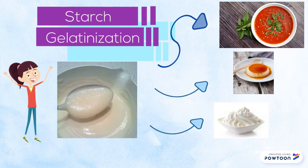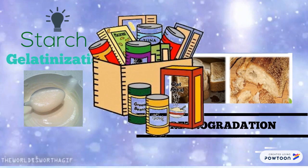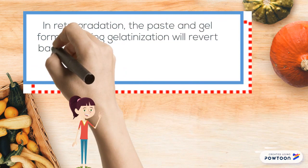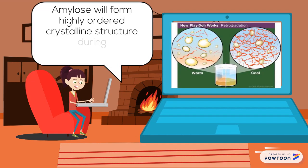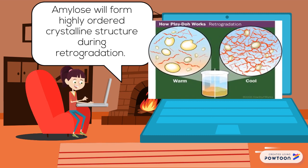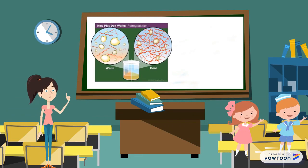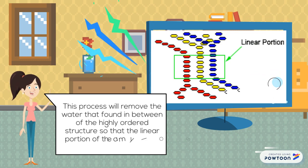Starch gelatinization is often accompanied by retrogradation upon staling and cooling. In retrogradation, the paste and gel formed during gelatinization will revert back to an insoluble form on freezing and aging, resulting in a change in food texture. Upon cooling and storage, retrogradation will take place and the amylose that leached out from the granules will line up to form a highly ordered crystalline structure. They form the crystalline region by joining together through hydrogen bonding. This process will expel the water between the highly ordered structures so that the linear portions of the amylose can crystallize.